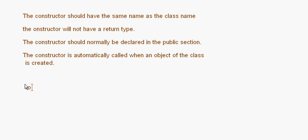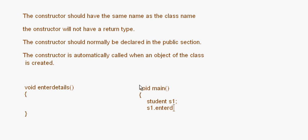Suppose I have a function void enterDetails. This is a normal function. In the main method we have to call this function explicitly — for example, if I make an object student s1, we call it as s1.enterDetails. This is an explicit function call. A constructor, however, is never called explicitly in the program. The constructor is automatically called when an object of the class is created.